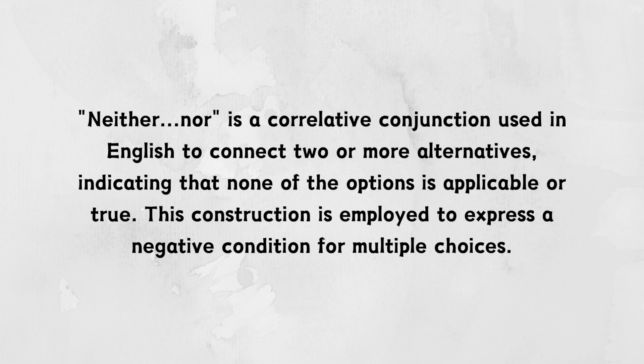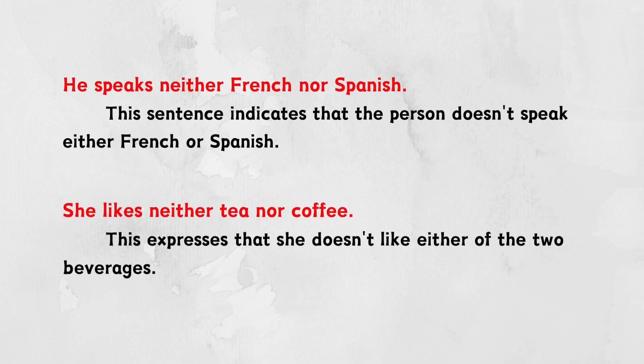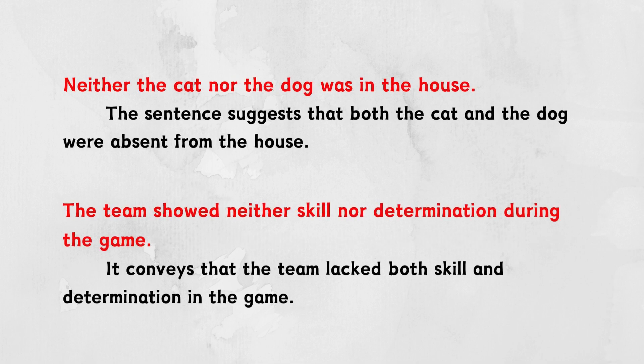Let's see the sentences and explanation. He speaks neither French nor Spanish. This sentence indicates that the person doesn't speak either French or Spanish. She likes neither tea nor coffee. This expresses that she doesn't like either of the two beverages. Neither the cat nor the dog was in the house. The sentence suggests that both the cat and the dog were absent from the house.